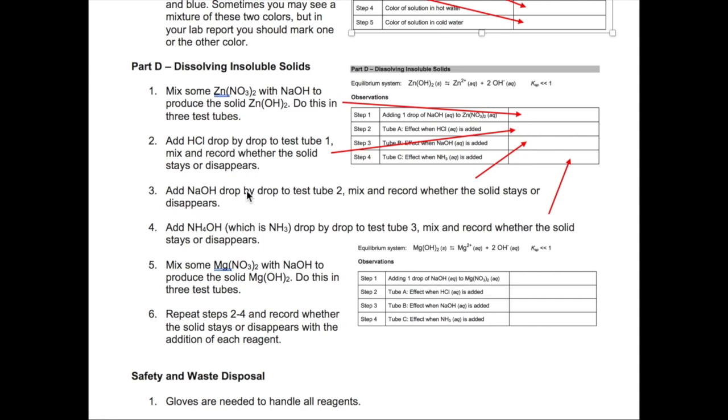Alright, last part of the lab is Part D. In this case, you will start by making your zinc hydroxide solid in three test tubes. You do this by adding sodium hydroxide to zinc nitrate as described in your lab procedure. Now that you have three test tubes containing zinc hydroxide, what you're going to do is to test tube one, you're going to add HCl one drop at a time followed by mixing with the stirring rod and observing what happens to the precipitate.